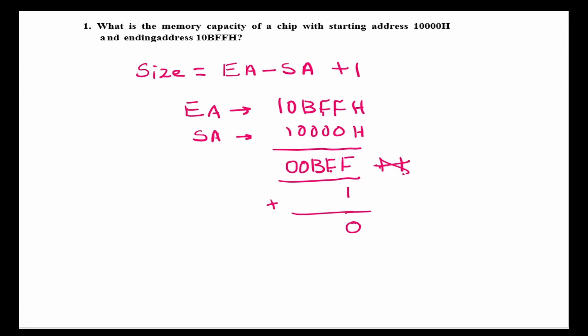So, that 1 is added with this F. So, again, 16. So, 0 and 1 will be carried to the next digit. Here, you have B, A is 10, B is 11. So, 11 plus 1, 12, 12 means C and here 0, 0.